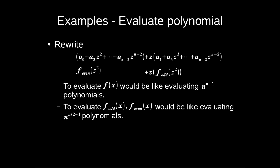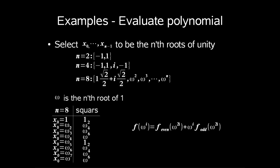We need to select x0 to xn-1 in a smart way. We now choose our x0 to xn-1 to be the nth root of unity. If this concept is new to you, here's a brief explanation. n equals 2 would be the numbers minus 1 and 1. n equals 4 is minus 1, 1 and the imaginary number i and negative i. n equals 8 would be the sequence where we have omega. Where omega is the nth root of 1. So by choosing x to be the nth root, you can see from this table the split we would see.